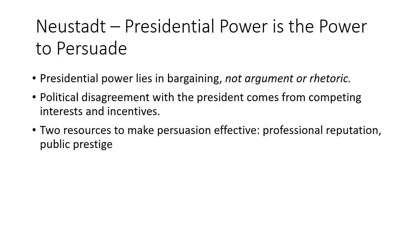The key to presidential persuasion lies in bargaining. This is different from argument or rhetoric, which involve using communication strategies to win a debate or convince others that the president's ideas are best. Instead, bargaining acknowledges that disagreements with the president are the natural result of competing interests and incentives. Members of Congress have distinct constituencies from the president. Sometimes they hesitate to go along with the president because they worry about the impact of the president's plans in their own state or district. Foreign leaders respond to their own national constituencies and do not automatically see things the way the president does. It's up to the president to bargain using the powers of the office to find ways to get others to find it in their own best interest to cooperate.